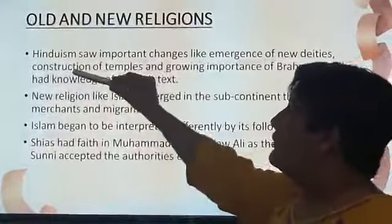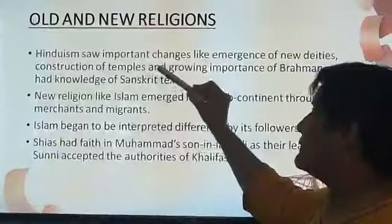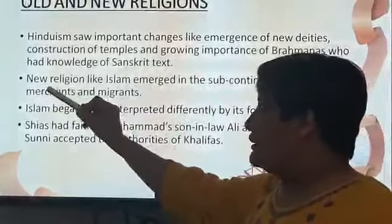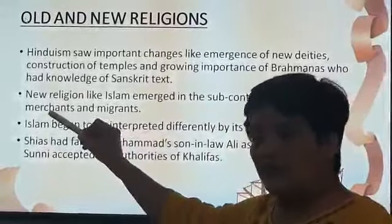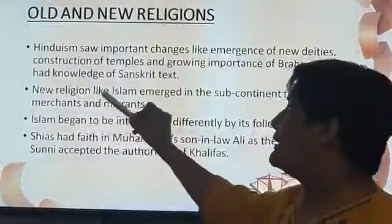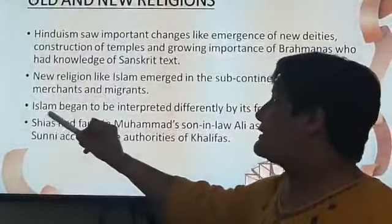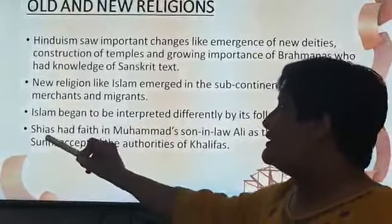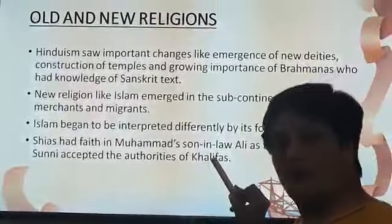Hinduism saw important changes like the emergence of new deities, construction of temples and the growing importance of the Brahmanas who had knowledge of Sanskrit texts. New religions like Islam emerged in the subcontinent through merchants and migrants who came to India for trade or other purposes. They brought with them Islam. Islam began to be interpreted differently by its followers — it has two sects: Shias and Sunnis. Shias had faith in Muhammad's son-in-law Ali as their leader, and Sunnis accepted the authority of the Khalifa.